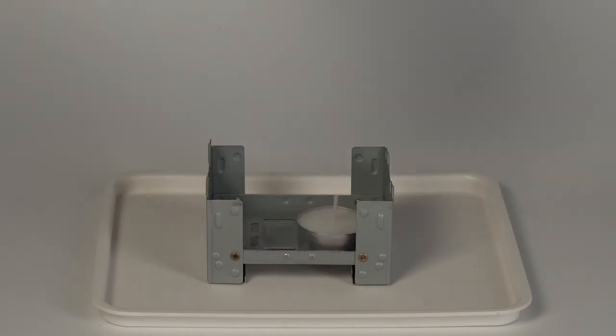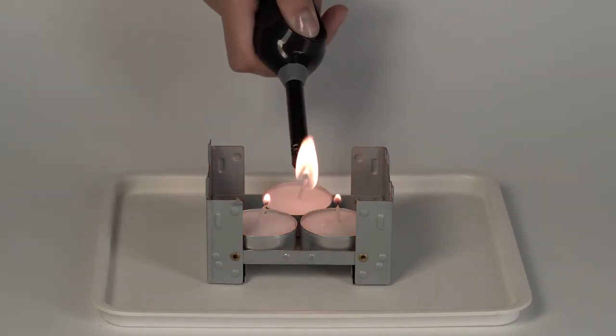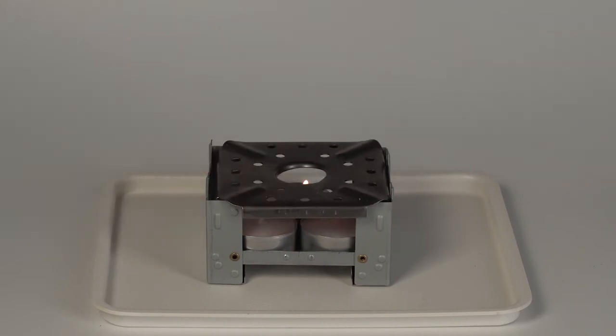Put the stove onto the tray. Set three candles onto the stove and light them. Cover the stove with the flame diffuser and then with the foil.